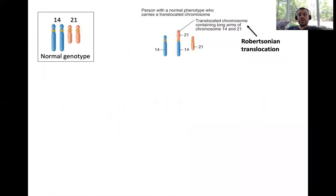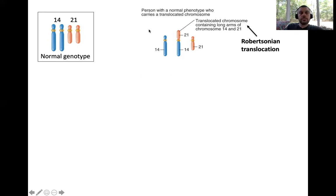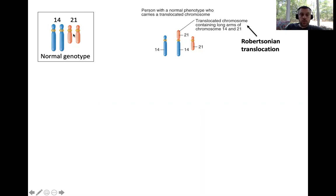Let's look at familial Down syndrome in detail. A normal genotype has two copies of chromosome 14 and two copies of chromosome 21. This is an example of a parent who has a Robertsonian translocation — a version of a simple translocation. In this particular individual, the long arm of chromosome 21 has undergone a translocation to the end of chromosome 14.